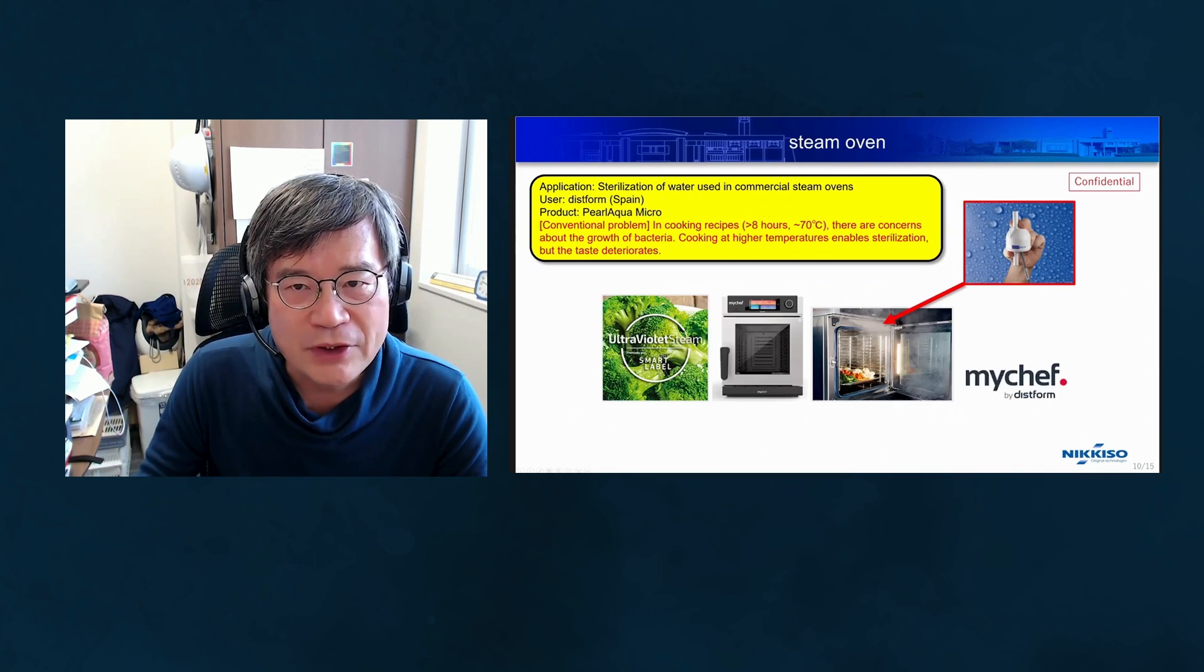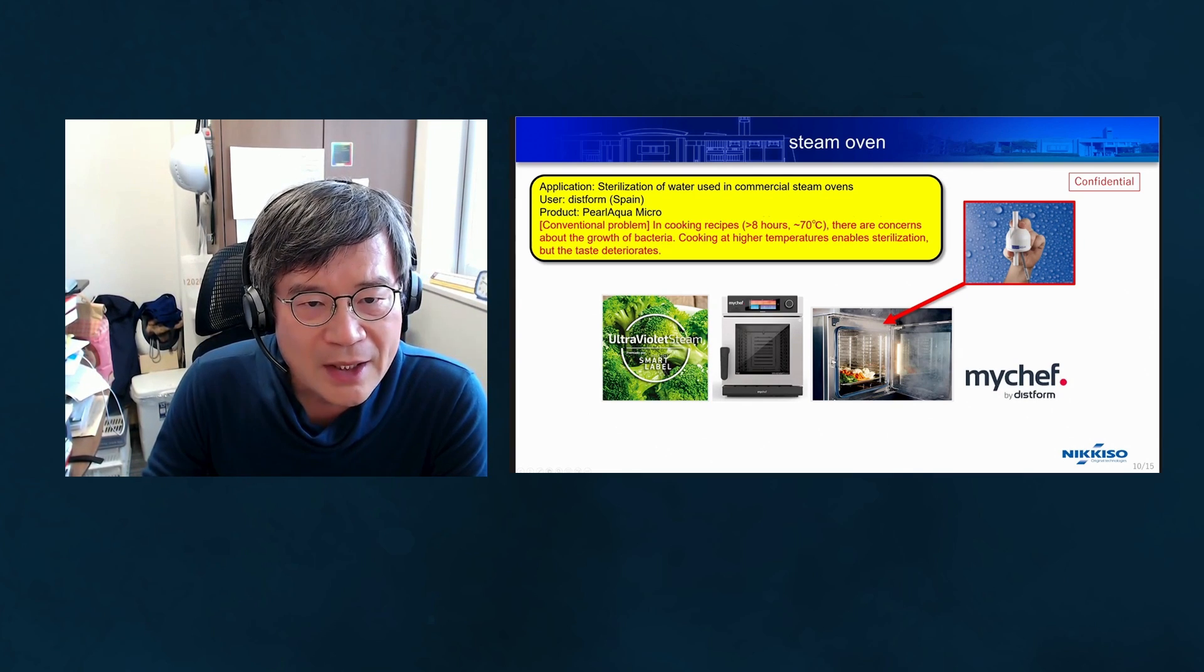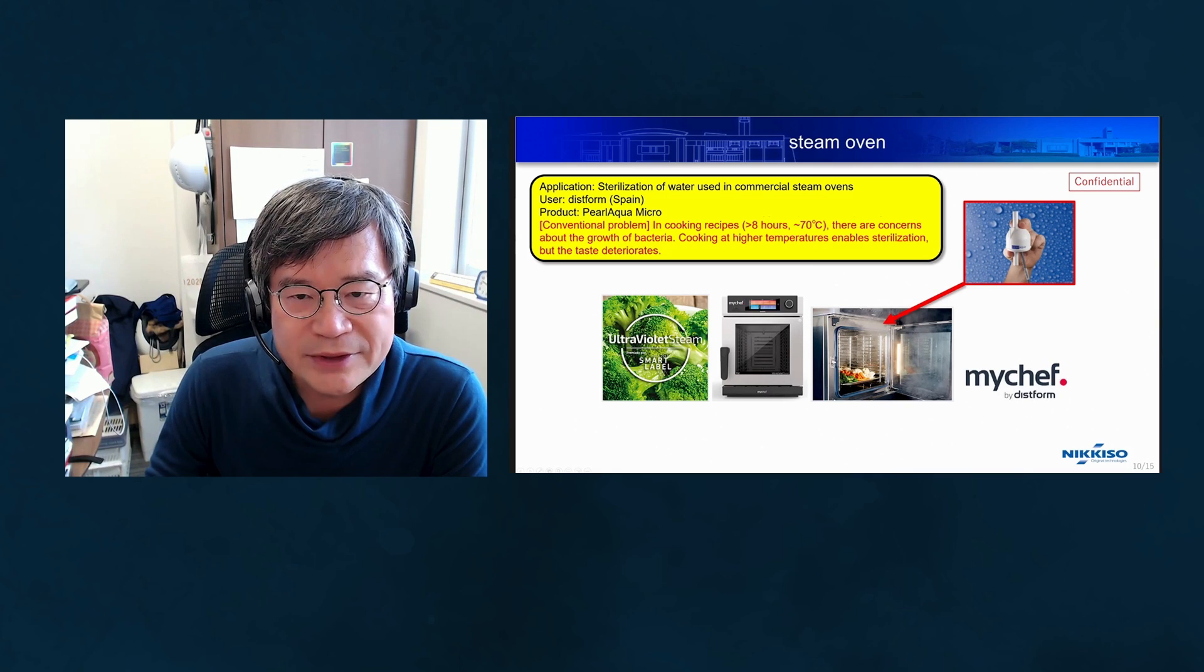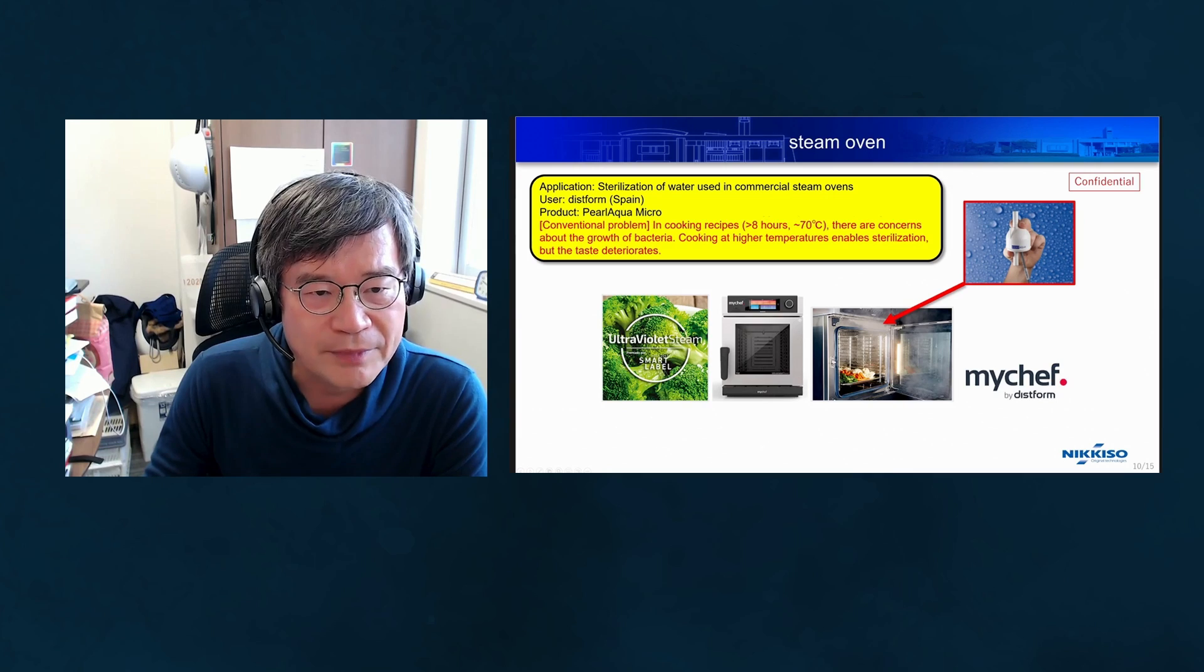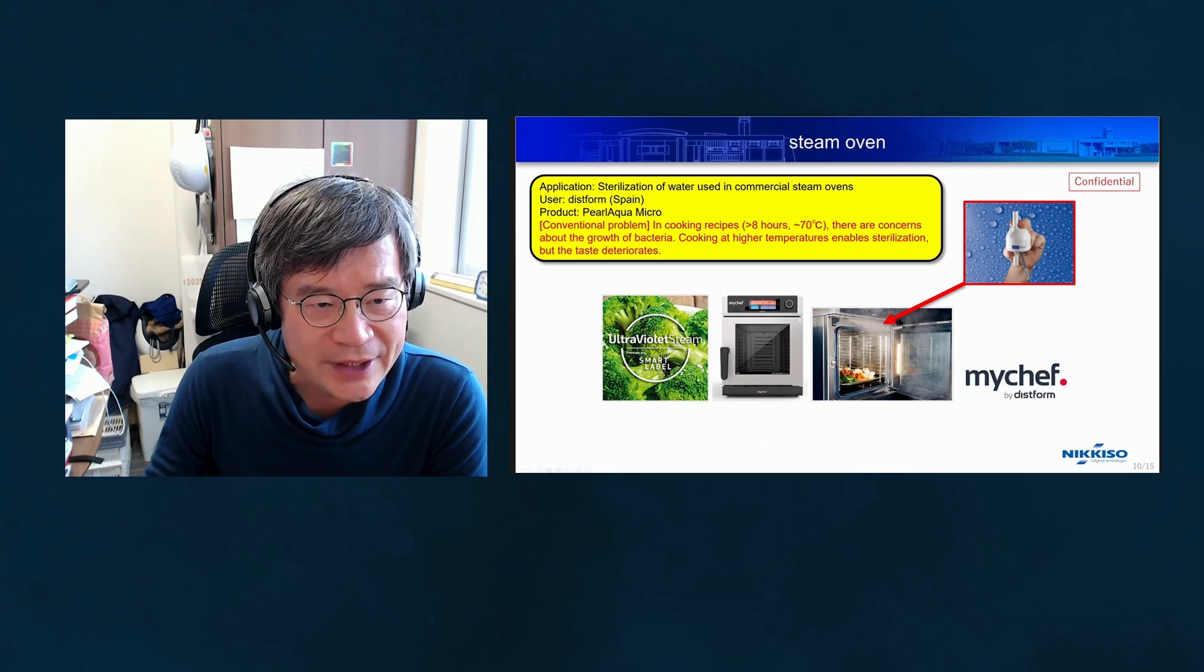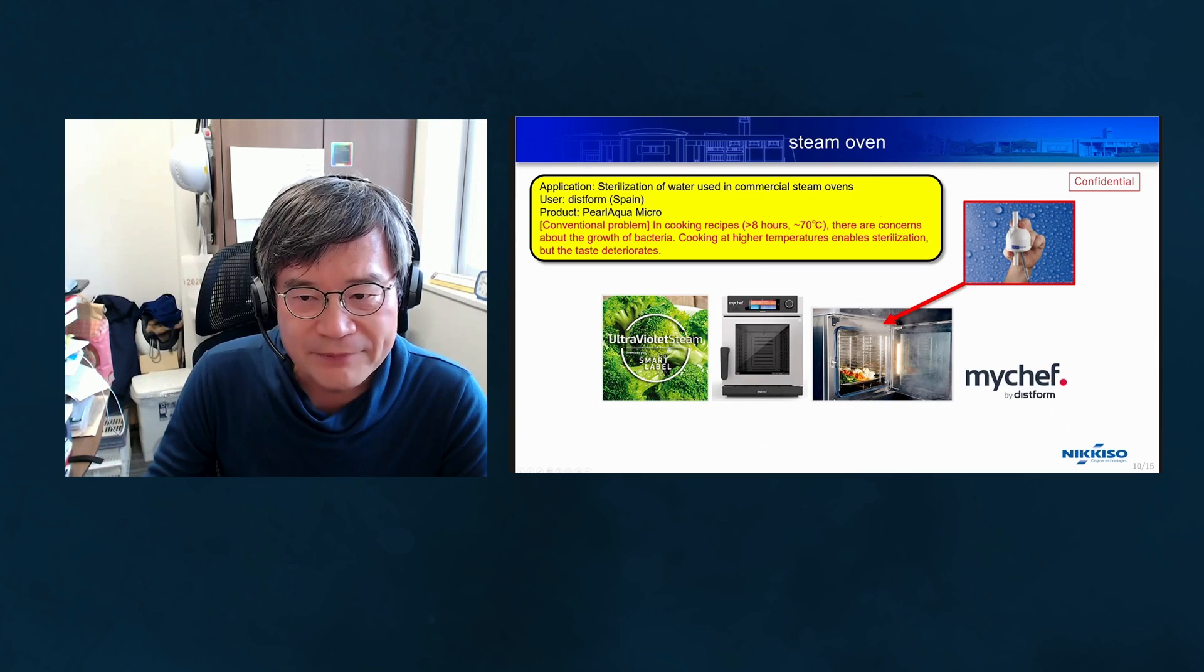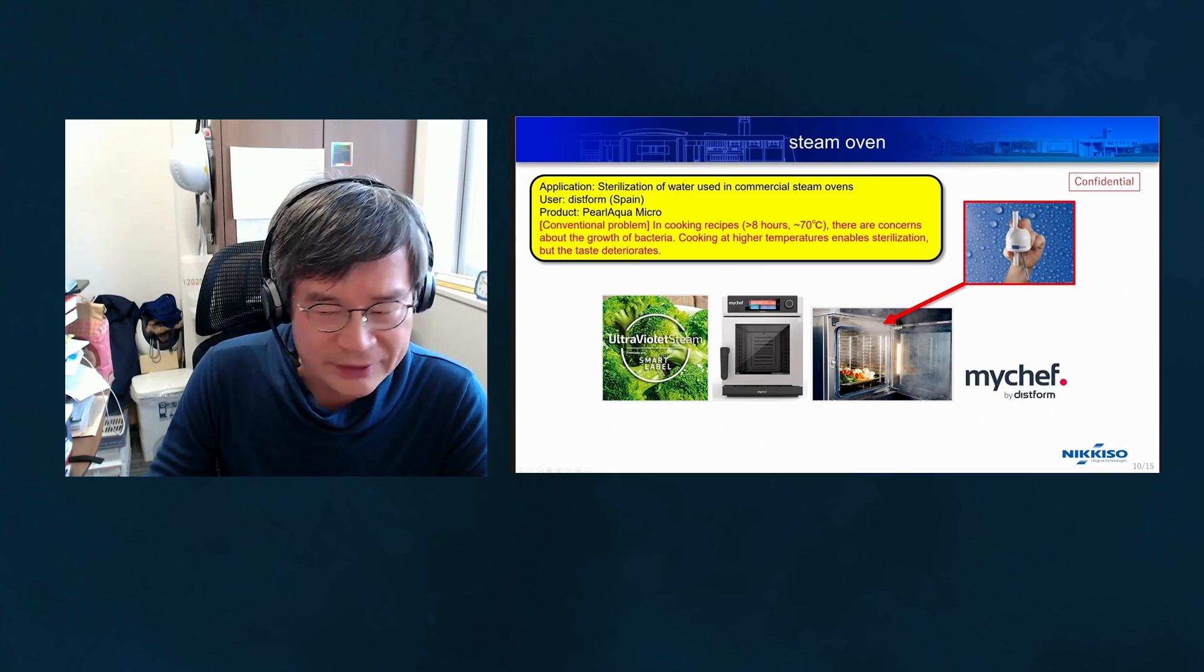This is also used for cooking in steam ovens. In cooking recipes longer than 8 hours at 70 degrees, there are concerns about bacterial growth. Cooking at higher temperatures enables sterilization, but the taste deteriorates. For lower temperature cooking, this system is very effective.